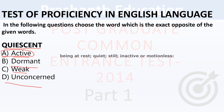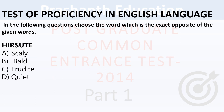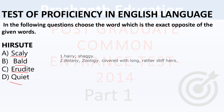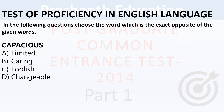Next antonym: 'hirsute' — options: scaly, bald, educated, quite. Hirsute means hairy or shaggy, covered with long rather stiff hair. The exact opposite is 'bald'. Correct answer is B — bald.